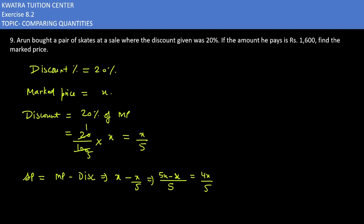Simplifying X minus X/5 gives 4X over 5. Now 4X over 5 is equivalent to the amount he paid, which is Rs. 1,600. So X equals 400 multiplied by 5, which is Rs. 2,000. The mark price is Rs. 2,000.